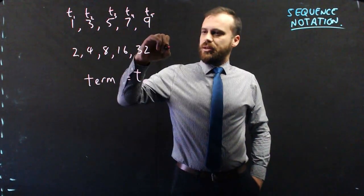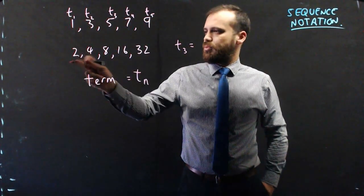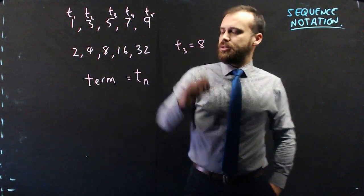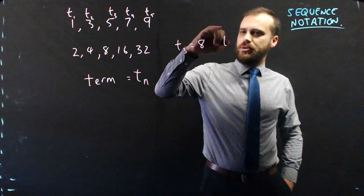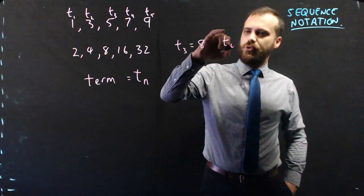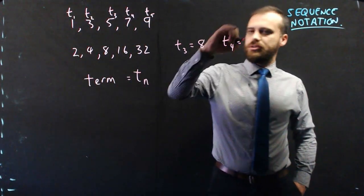So here, term 3 is the third term. 1, 2, 3, 8. And term 4 is 16.